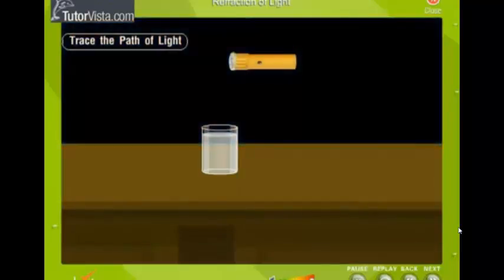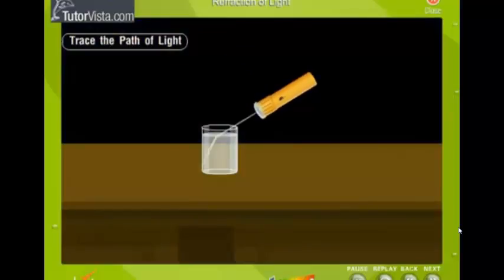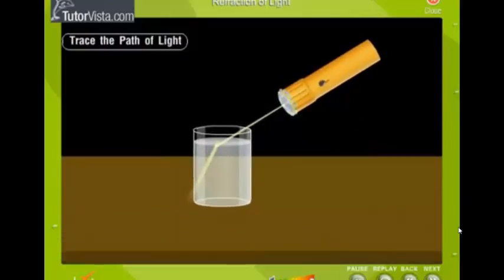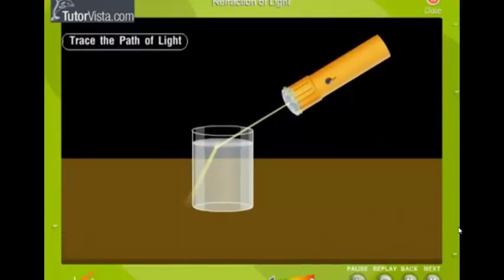Darken the room. Shine the ray of light from the torch to the bottom of the glass. Observe the path of the ray of light. The path is crooked. This shows that a ray of light changes its direction of propagation as it travels from air to water.